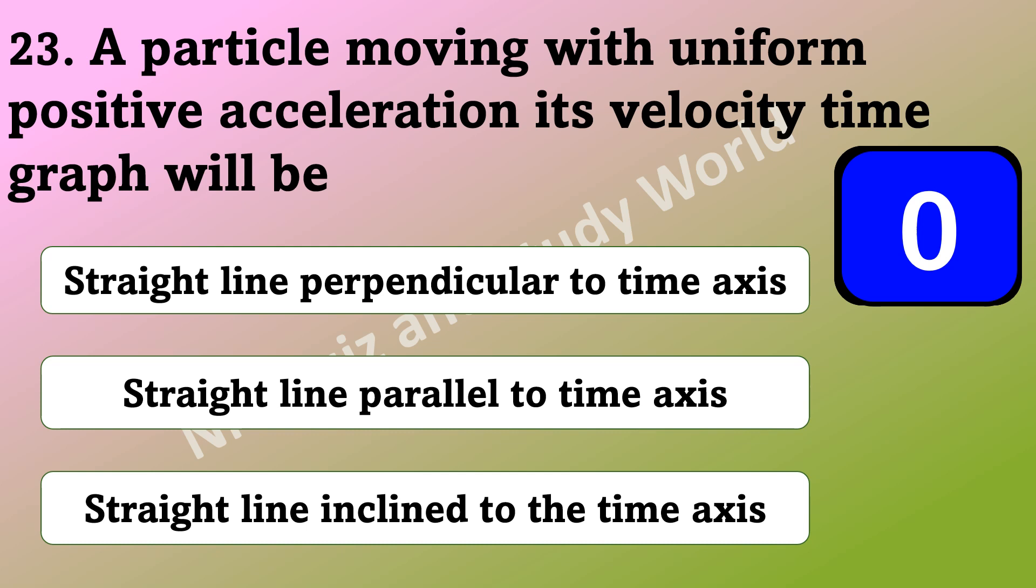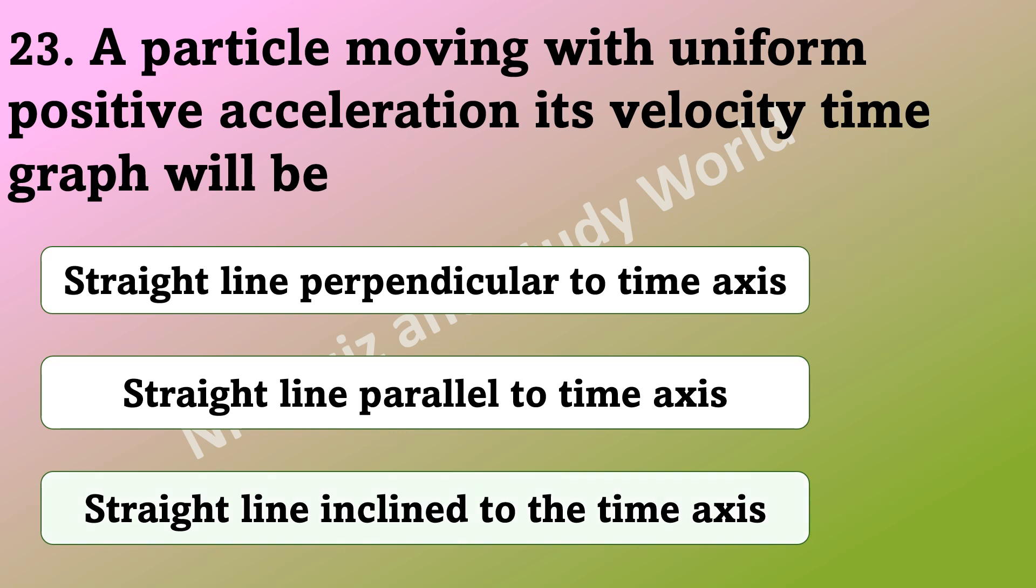If a particle is moving with uniform positive acceleration, then its velocity time graph will be a straight line perpendicular to time axis, straight line parallel to time axis, or straight line inclined to the time axis? The answer is it will be straight line inclined to the time axis.